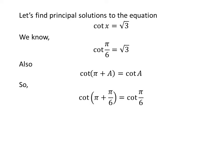Application of the above identity implies that cot(π + π/6) = √3. This means cot(7π/6) = √3.